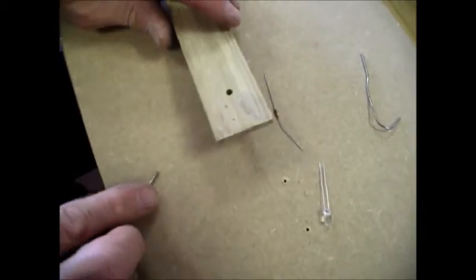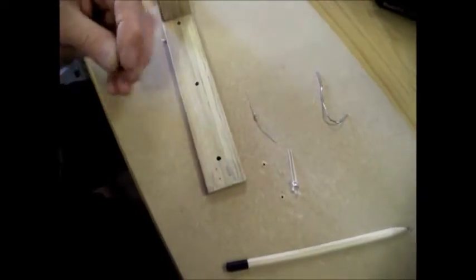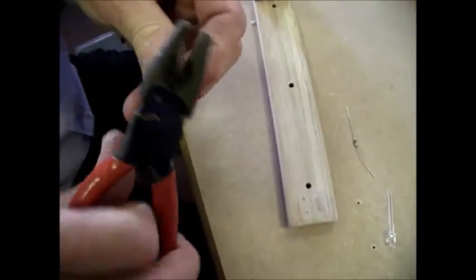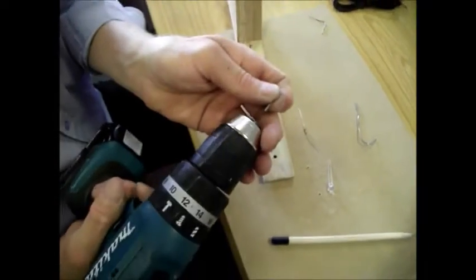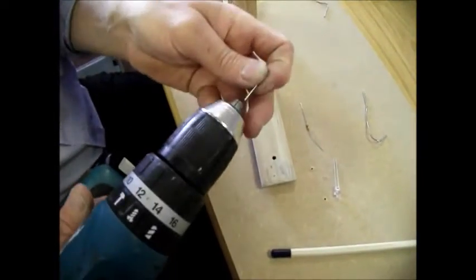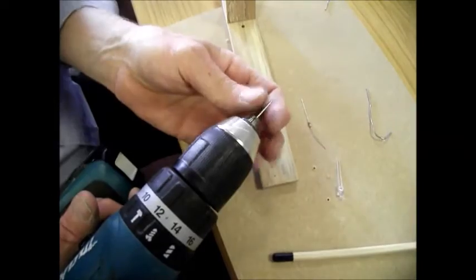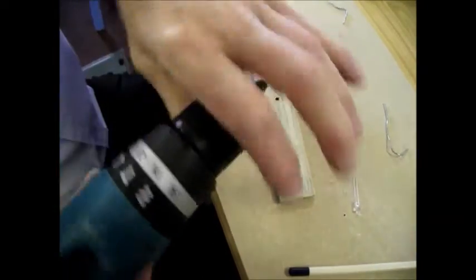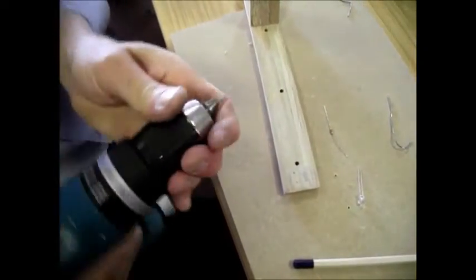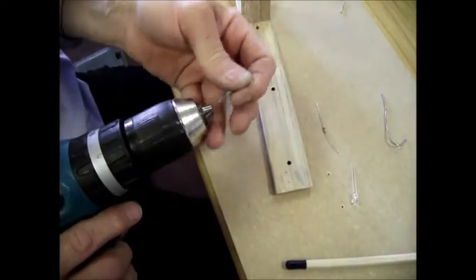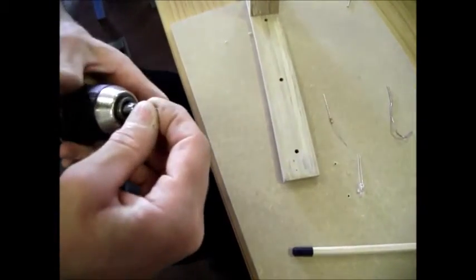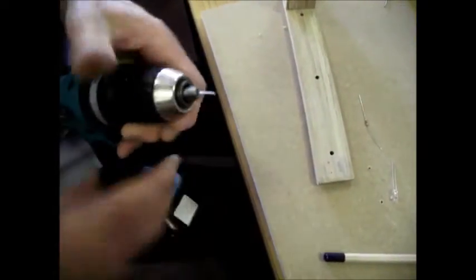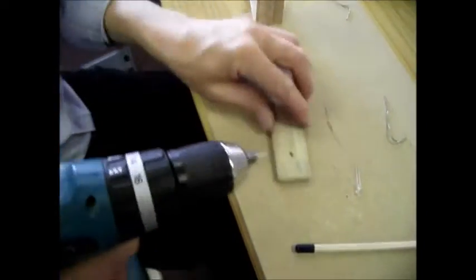To drill those holes, the usual trick is to take a panel pin, cut the head off and put it in a cordless drill and drill through. Just make sure you get it in there. That's it. So drill through on those three holes.